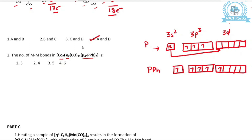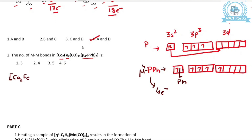In the μ4-PH form, it accepts and donates 4 electrons, resulting in the formation of covalent bonds with 4 metals as well. So this is a 4-electron donor. Now let us draw this complex and calculate its total electron count.